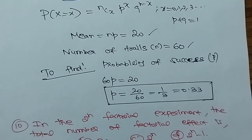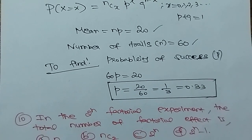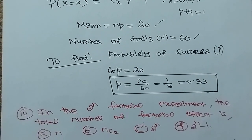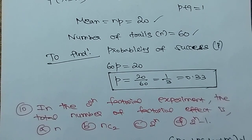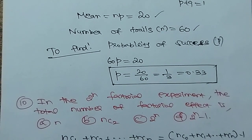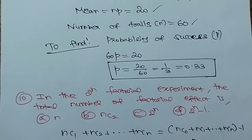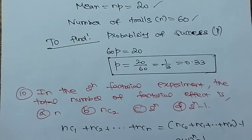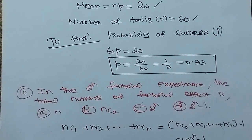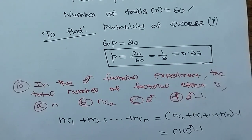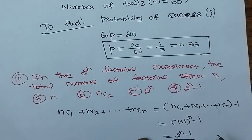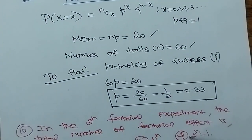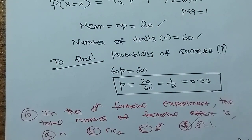In a 2^n factorial experiment — an analysis of variance question — the total number of factorial effects is: Option A: n, Option B: nC2, Option C: 2^n, Option D: 2^n minus 1. Using combinations nC0 + nC1 + ... = 2^n, minus 1 gives 2^n - 1. Option D is the correct answer.